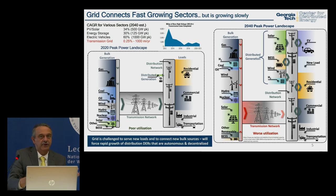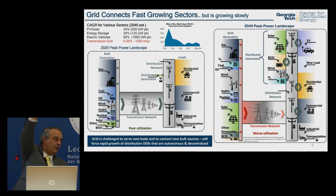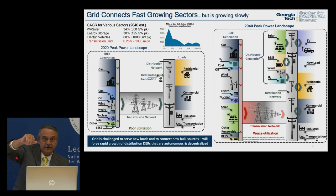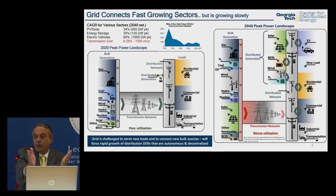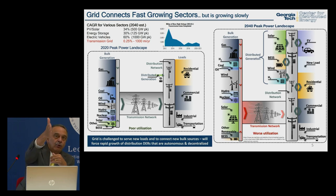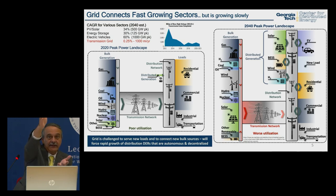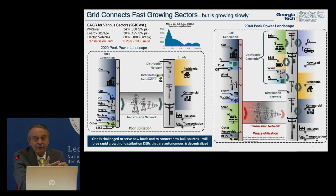We're already seeing fleet operators and data center operators building local generation to feed their loads because they can't wait for the utility. If we build a lot of new transmission to connect really poor-capacity-factor generation, utilization gets much worse, degrading economic justification. This is forcing rapid growth of distributed generation. The grid is under stress — reflected by 950 gigawatts sitting in the U.S. interconnection queue right now.